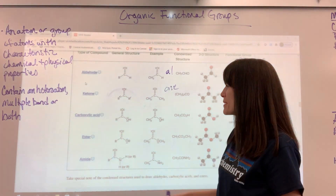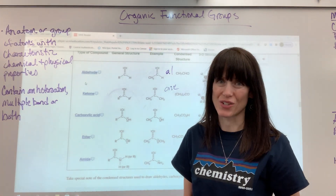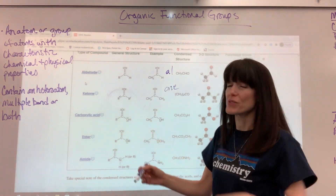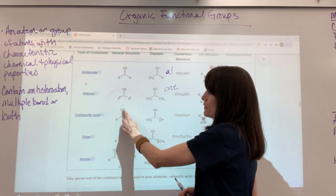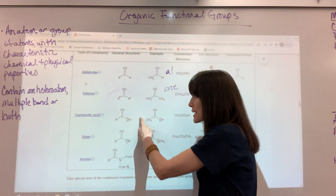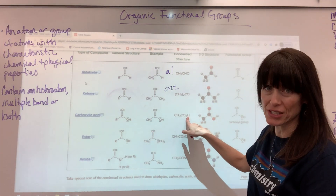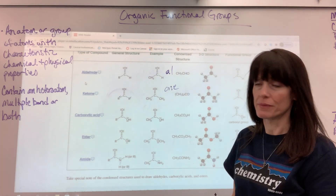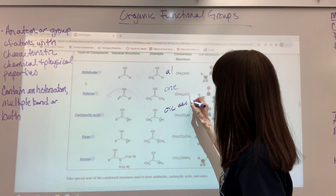Carboxylic acids — again, it's always that last carbon. You have a carbon with a double-bonded oxygen and an OH. It looks like the marriage between an aldehyde — there's your double-bonded oxygen on the last carbon — and an alcohol, the OH. Together that is a carboxylic acid, written as CO2H. The suffix is -oic acid.